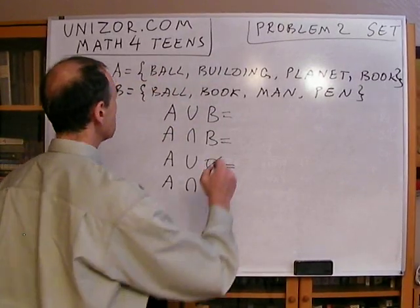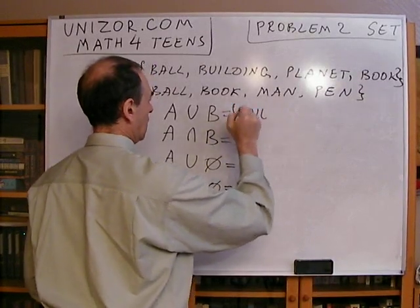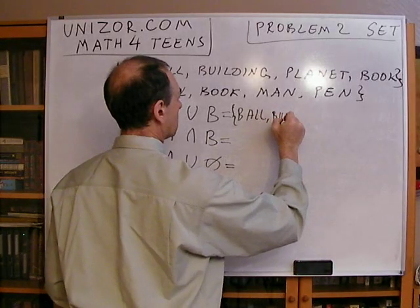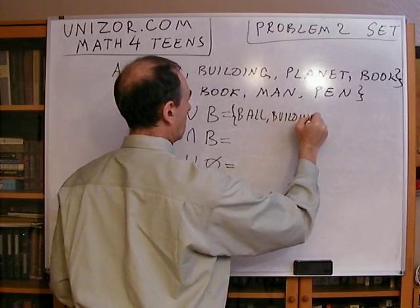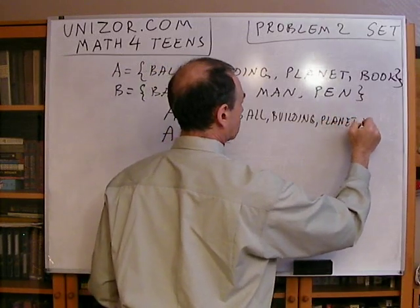Obviously, everything from A should be included, which is wall. I'll put curly brackets around. Wall, building, planet, and book.